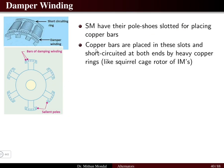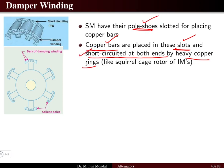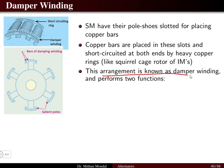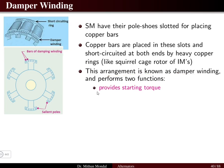When slots are present in the pole shoes, copper bars are generally placed in them. These copper bars are short-circuited at both ends by heavy copper rings — similar to the squirrel cage rotor of an induction motor. This arrangement is known as damper winding. The slots present in the pole shoes of the rotor hold the copper bars, which are short-circuited, and this is known as the damper winding.